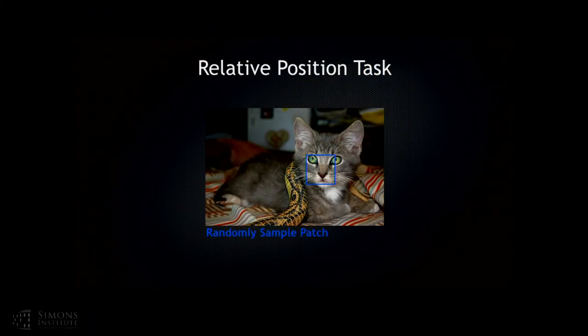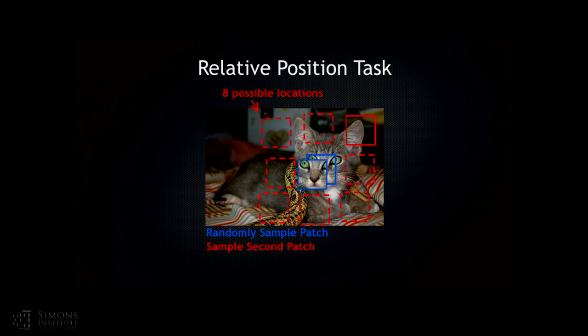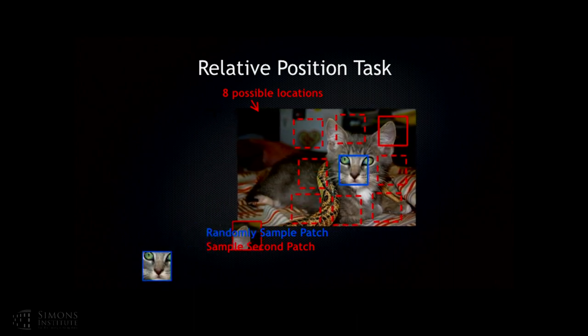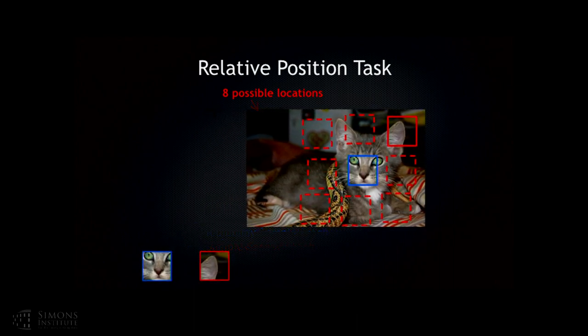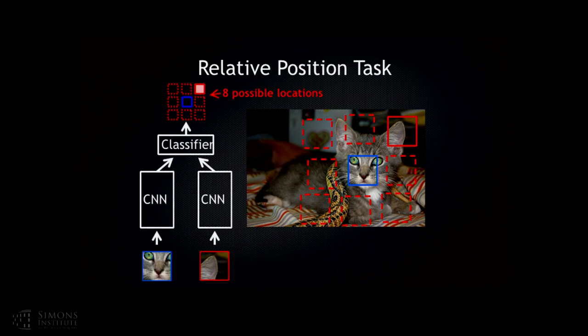Our idea was very simple. Given an image, we sample two patches — first a random patch, then a second patch from one of eight locations. We take both patches, feed them into a Siamese network, so both patches compute a representation through a CNN. After getting the final representation of these patches, we learn a classifier on top to predict the relative spatial layout. This is an eight-class problem. Ground truth is free because you are just plucking patches from an image, so you know how they are configured.